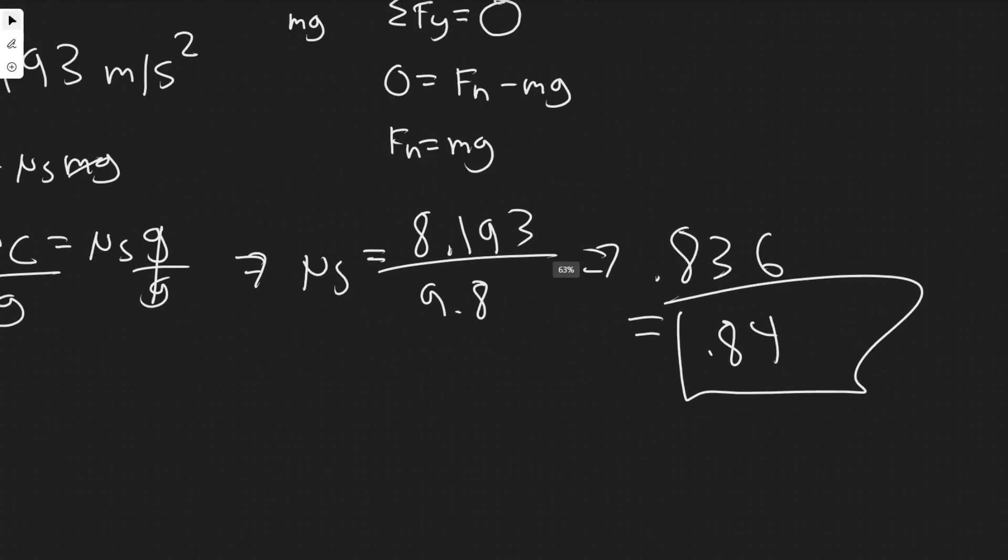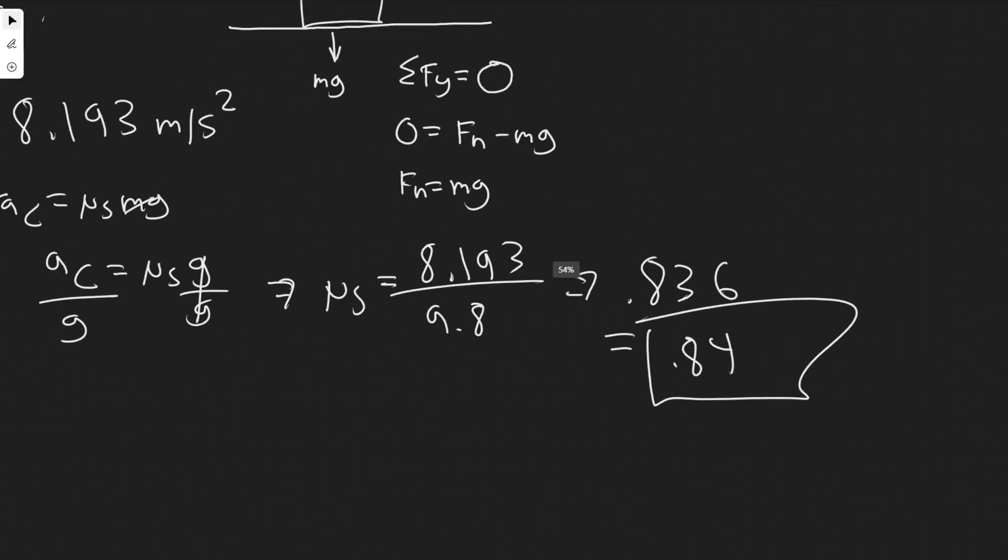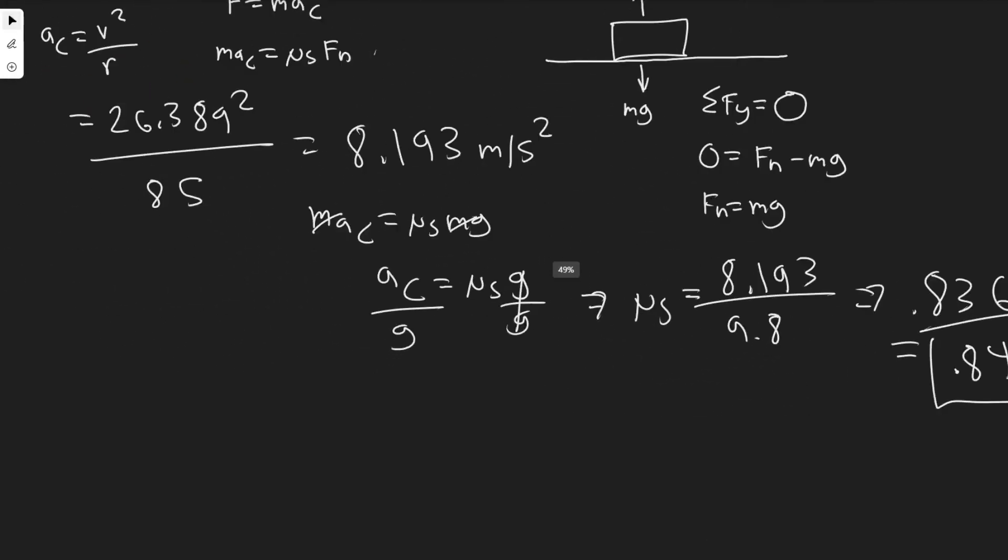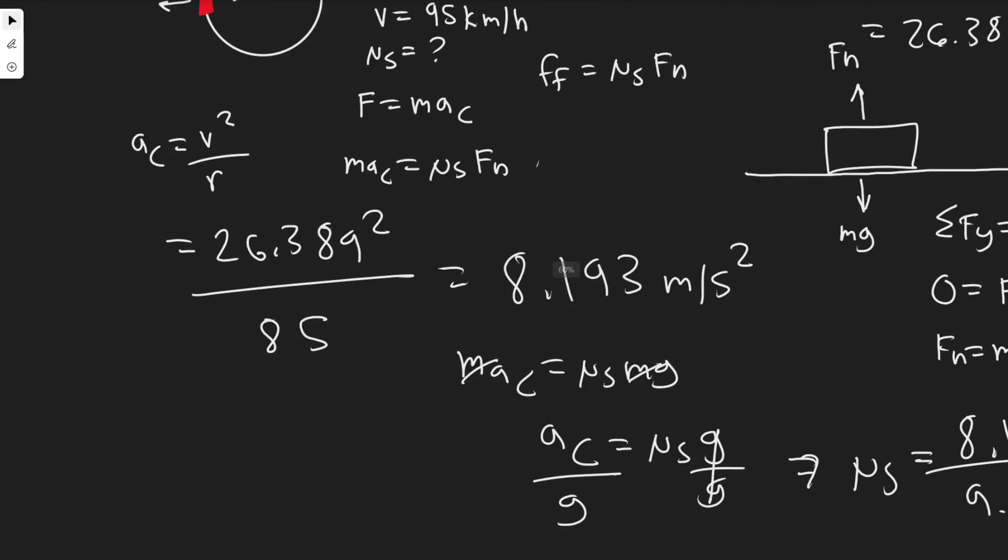So 0.84, that's going to be the required or how big the coefficient of static friction must be in order for it to go around this curve, right, around this level curve.